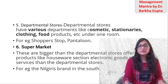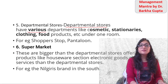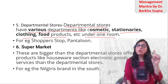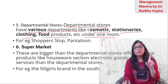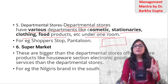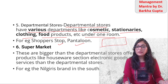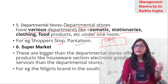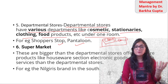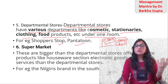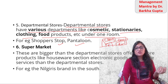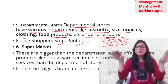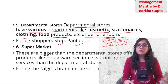Now, departmental stores. Departmental stores have various departments like cosmetic, stationery, clothing, food products, etc., all under one roof. In one place, you get multiple things. Like Shoppers Stop or Pantaloons — one section will be clothes, the second section will be cosmetic, the third section will be footwear, the fourth section will be stationery. So in one place you have different departments.